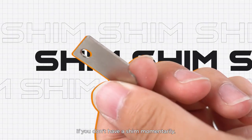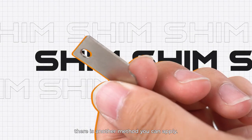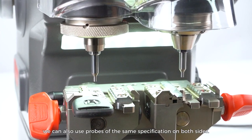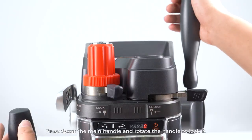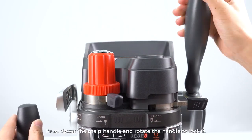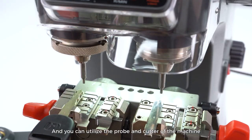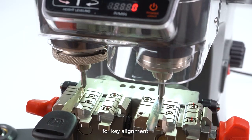If you don't have a shim momentarily, there is another method you can apply to ensure the accuracy. We can also use probes of the same specification on both sides. Press down the main handle and rotate the handle to lock it, and you can utilize the probe and cutter of the machine for key alignment.